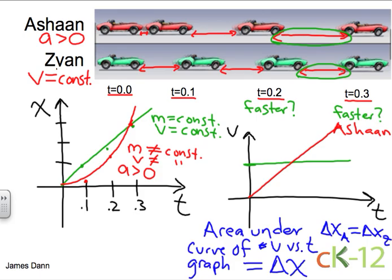So all we have to do is look at the area. And for Ashaan, the area is this much. So I'll draw this straight down. So this is the area for Ashaan, and then the green, well, that's the area for Zion.